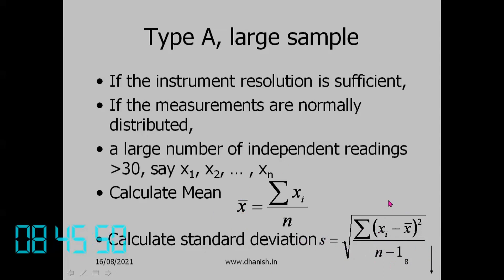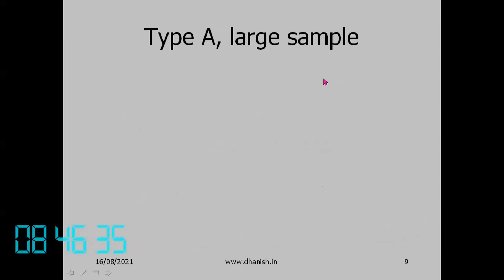When this is a sample from a large population, using n−1 makes s an unbiased estimator of the population standard deviation. If it is the full population, we use n. After taking a large number of readings you calculate the average and standard deviation. The measurement result is x̄, and the sample standard deviation s estimates the population standard deviation σ.